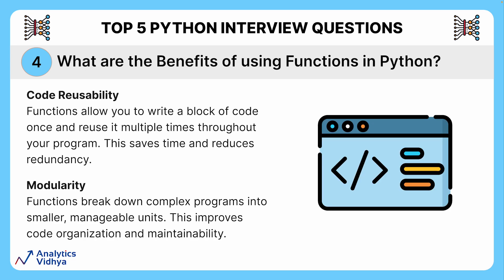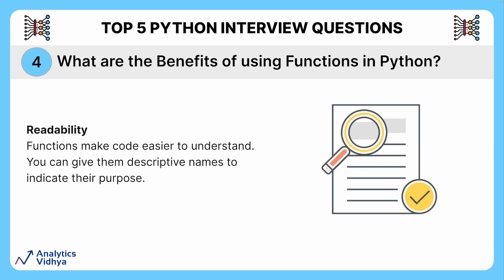Think of functions like tools in your coding toolbox. You create a function once with a specific task — like calculating an area or checking if a number is even — then you can reuse that function throughout your program whenever needed. This reusability saves you time and effort by not rewriting the same code multiple times. It also keeps your code organized and modular, making it easier to understand and maintain. Functions also improve readability through descriptive names that hint at their purpose, making your code self-documenting. So functions are like code superheroes, promoting reusability, organization, and readability.